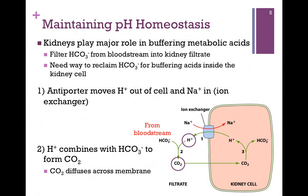The kidneys filter bicarbonate from the bloodstream into what's called the kidney filtrate, shown in our diagram. On the left of the diagram is the filtrate — what has been filtered from the bloodstream. We want to use the bicarbonate in the bloodstream to buffer acids inside the cell, but the problem is bicarbonate is charged, the cells are surrounded by a lipid bilayer, and it will not spontaneously diffuse into the cell. We need some way to get it inside.